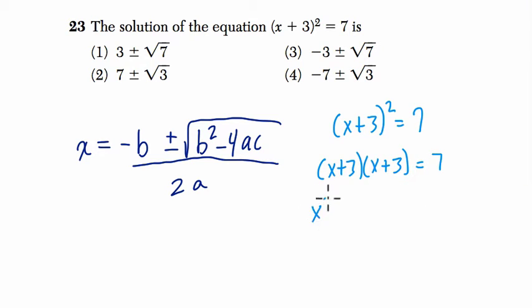Then I'm going to distribute. I get x squared plus 6x plus 9 equals 7. And then we're going to subtract 7 from both sides because in order to use the quadratic formula, your equation has to be written and balanced at 0. So x squared plus 6x plus 2 equals 0.